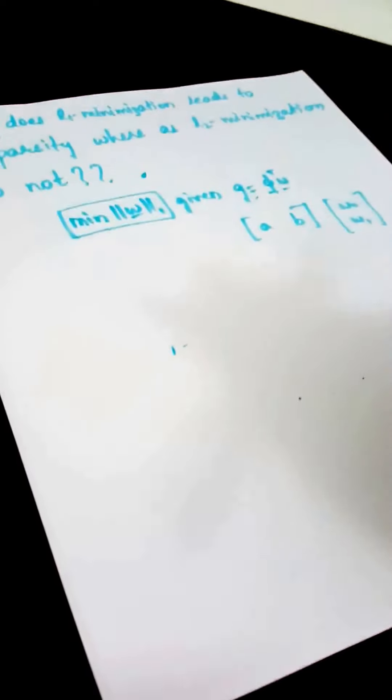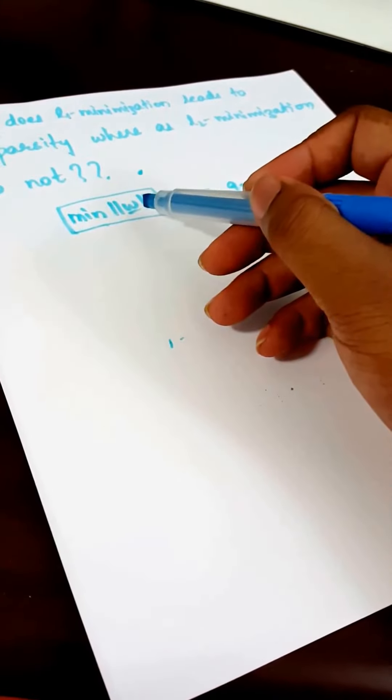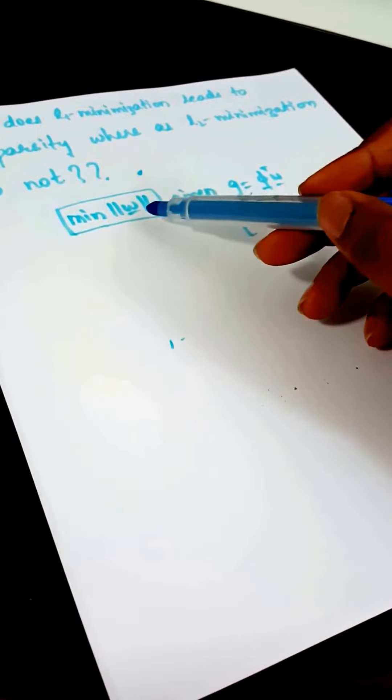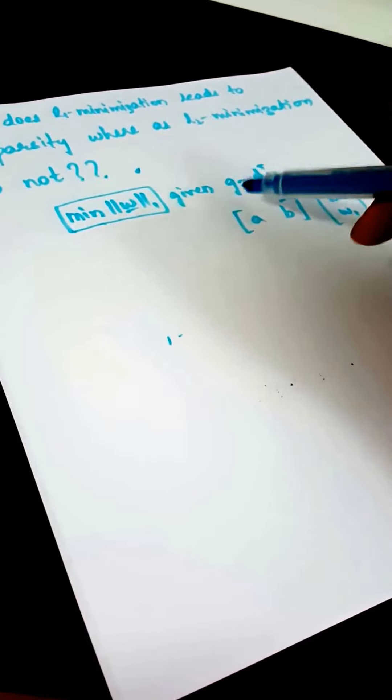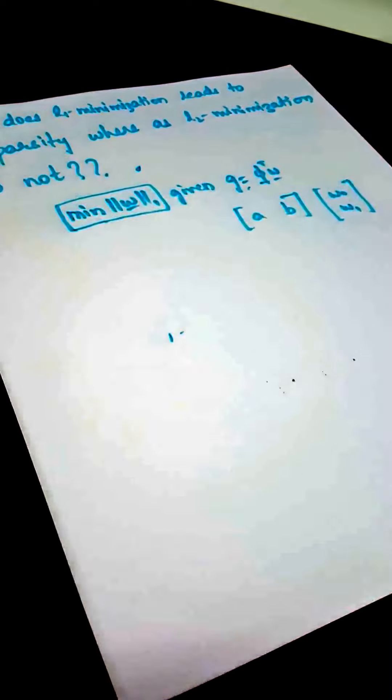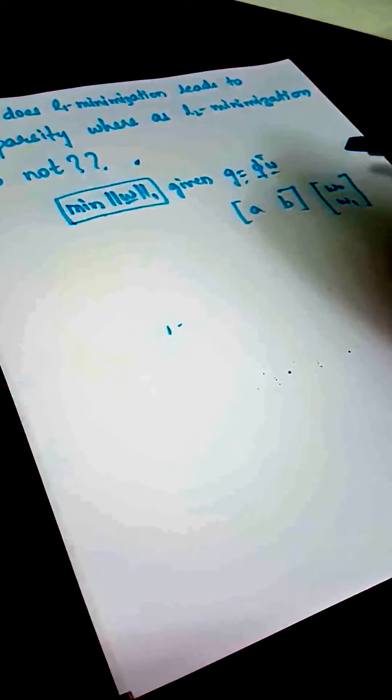Consider we want to minimize the L1 norm of W such that G equals Phi times W, where Phi is a vector of some constants.